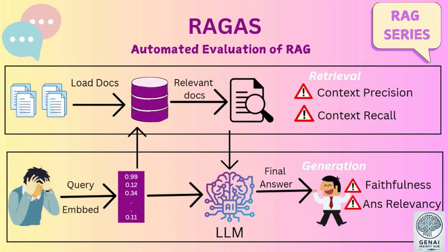Let's talk about RGAS's potential impact on different industries. The possibilities are really vast. Imagine financial advisors using AI powered by RAG to create personalized investment plans based on up-to-the-minute market data and research, or lawyers using RAG-based systems to analyze complex legal documents and find relevant precedents. This could also be hugely beneficial in education — students could use these systems to research complex topics, get personalized tutoring, or get feedback on their writing based on a wider range of sources than any human teacher could possibly access.